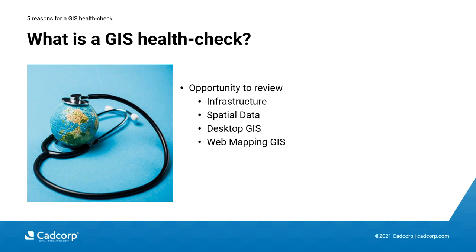Desktop GIS provides the capability to link to all the data your organisation has and conduct advanced analysis that can be shared with users across the organisation. It's important that the desktop GIS tools and infrastructure are up to the demands placed on them. Web mapping is always improving — websites are getting faster with improving technologies, making them more accessible and providing more functionality. You want to ensure users have everything they need to undertake their tasks at the speed they expect, especially given that other applications like Google Maps drive user expectations.